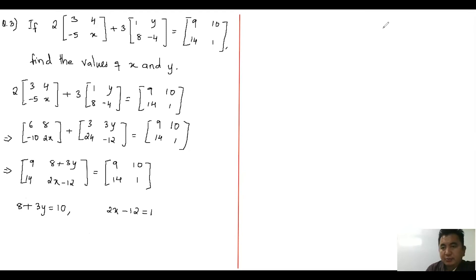When you equate on both sides, eight plus three y is here, we have this one is ten. So we have to equal to ten.